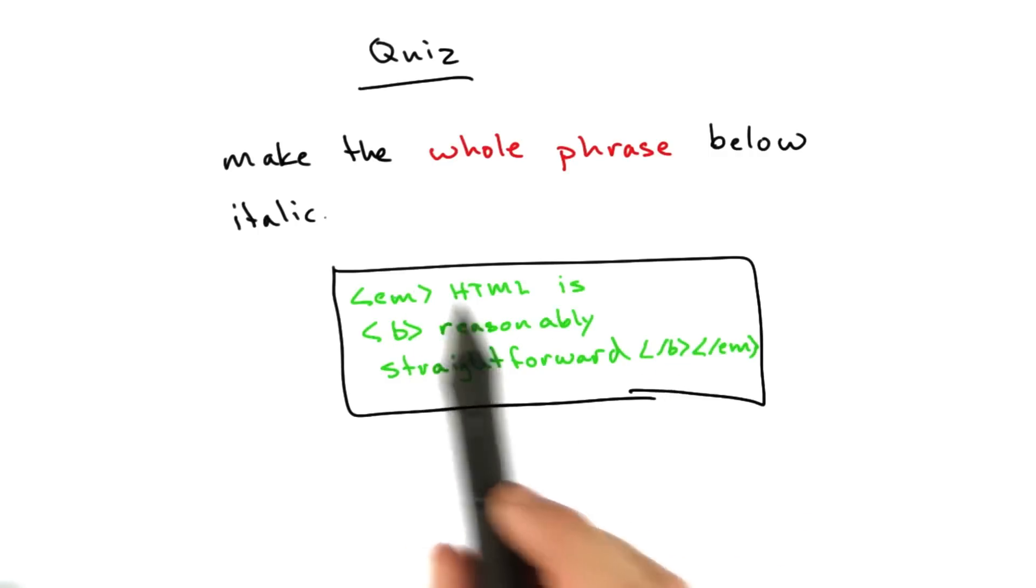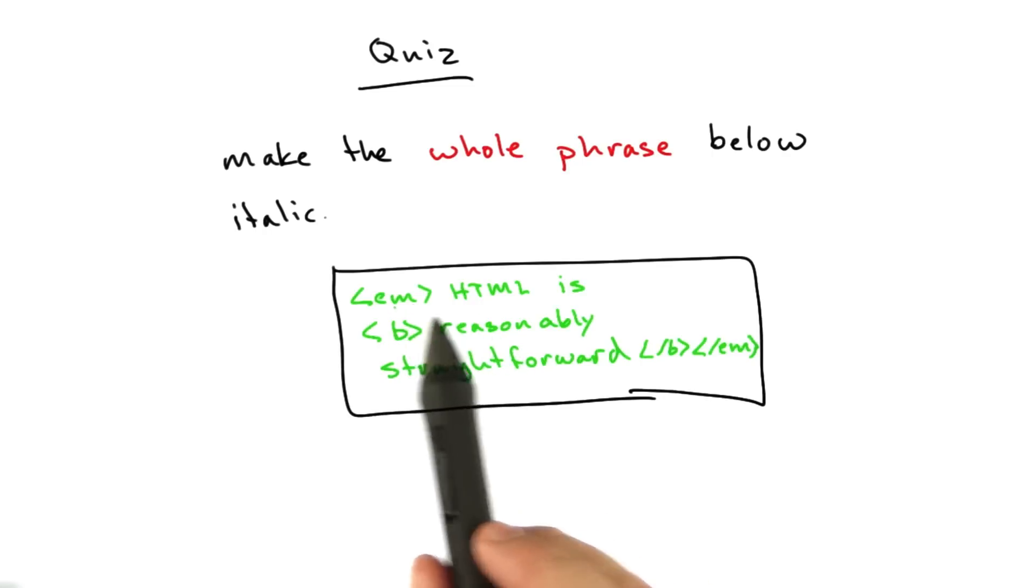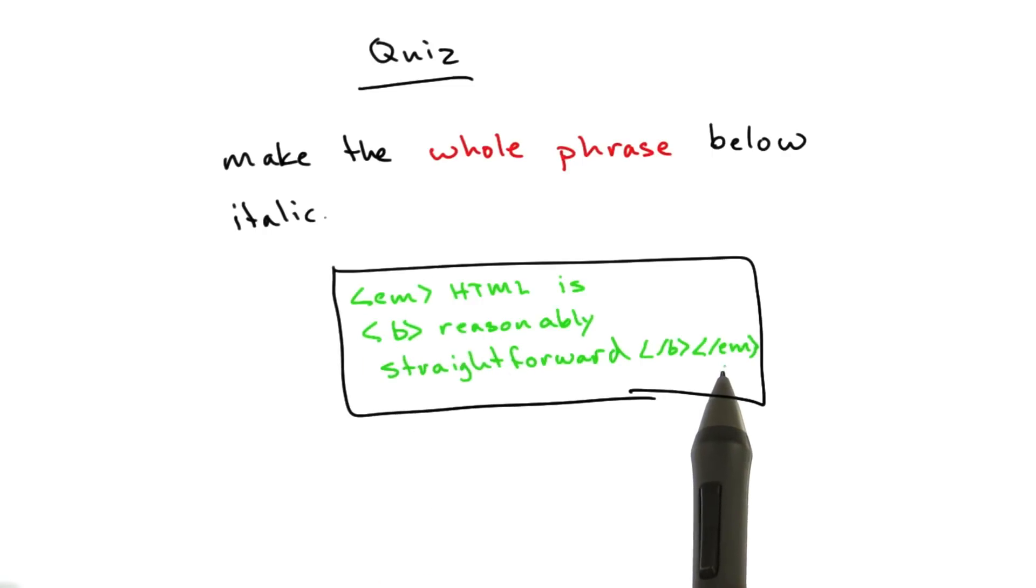Hopefully you managed to figure this out. HTML tags can be nested just fine, and the whole phrase is in italics because the whole phrase is surrounded by these tags. Just the words reasonably straightforward are in bold because those are the words surrounded by the b tags.